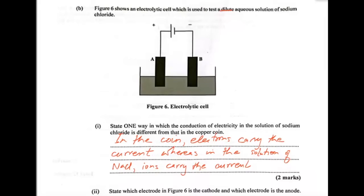Part 2 of B. State which electrode in figure 6 is the cathode and which electrode is the anode. So looking back at this figure, the electrode that's connected to the positive terminal is A, which is our anode. So A is the anode. And B, being connected to the negative terminal, is the cathode. Whenever I write anode, I normally put a plus beside it. Whenever I write cathode, I put a minus beside it, just to help me to remember.